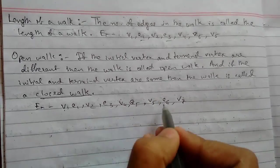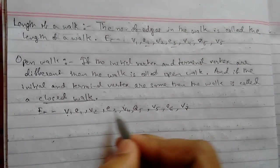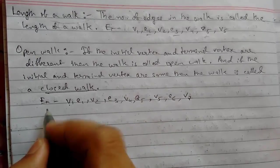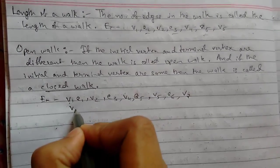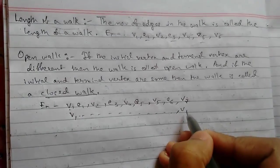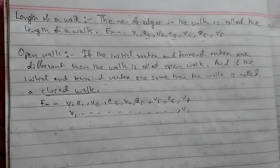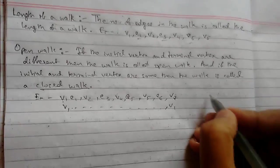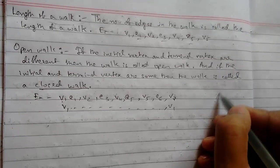So here we see that the initial and the terminal vertex are different, so it will be an open walk. And similarly, suppose in between this the terminal vertex is also v1, so we can say that it is a closed walk. The closed walk will represent physically a cycle or closed loop.